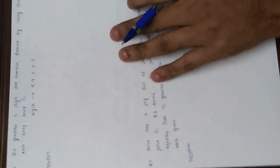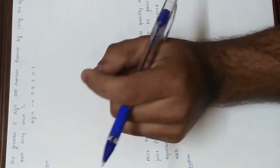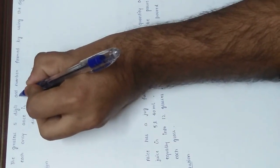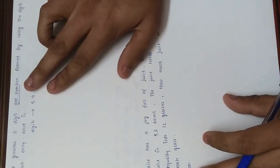We are given five digits: 5, 9, 2, 0, and 3, and we have to create the greatest five-digit odd number using all these digits. If we want to create the greatest number without the odd number condition, the answer would be simple — just arrange the digits in descending order.